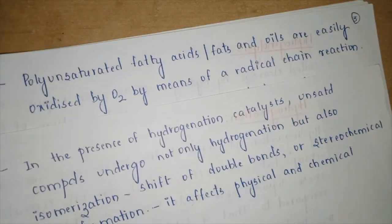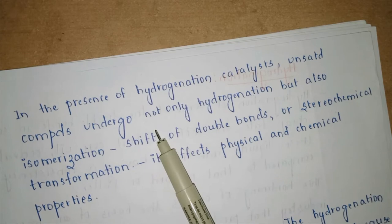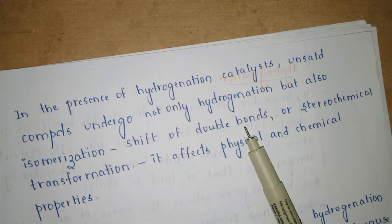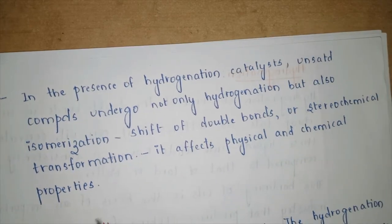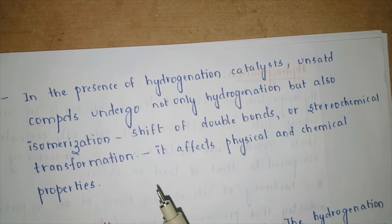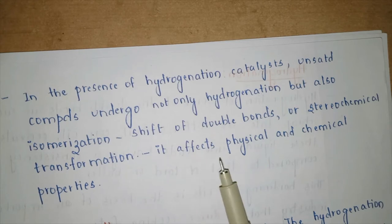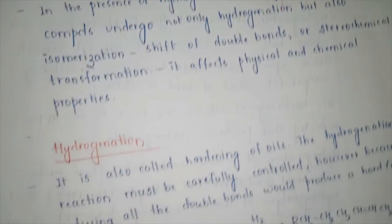In the presence of a hydrogenation catalyst, unsaturated compounds undergo not only hydrogenation but also isomerization — a shift of double bonds or stereochemical transformation. Adding hydrogens to the double bond system may cause a shift of the double bonds through an allylic position, which changes the physical and chemical properties of the fat.